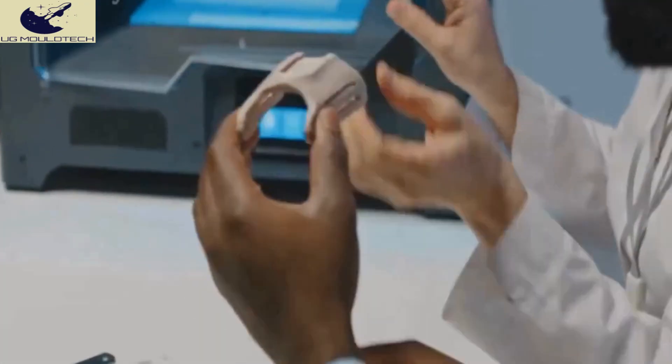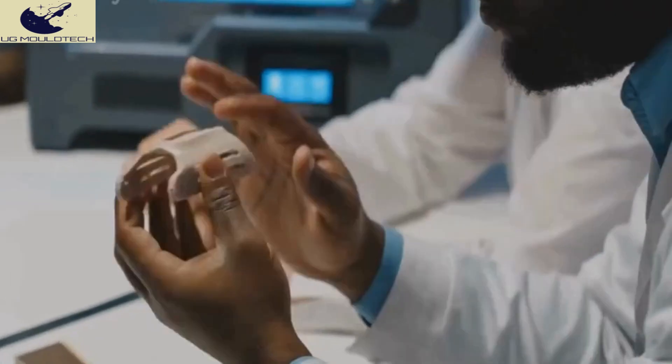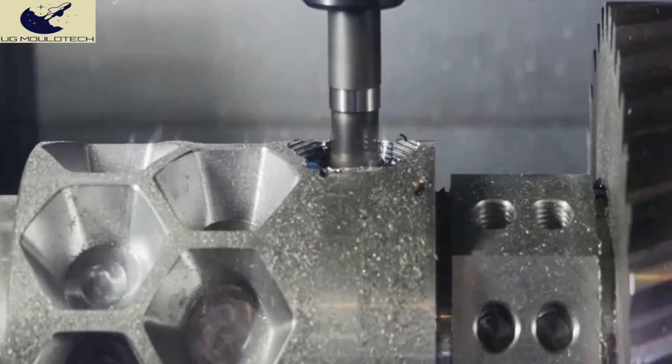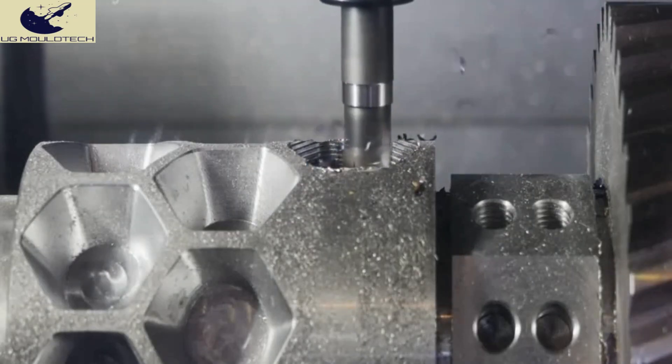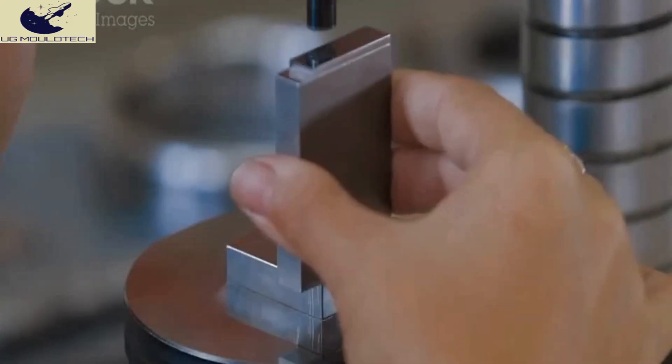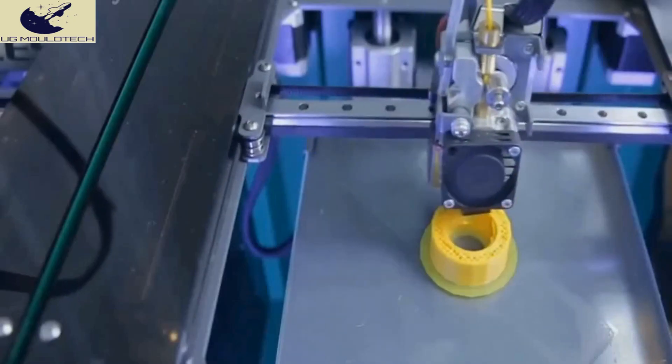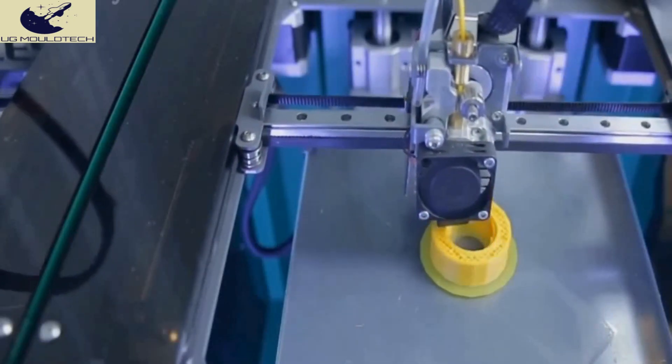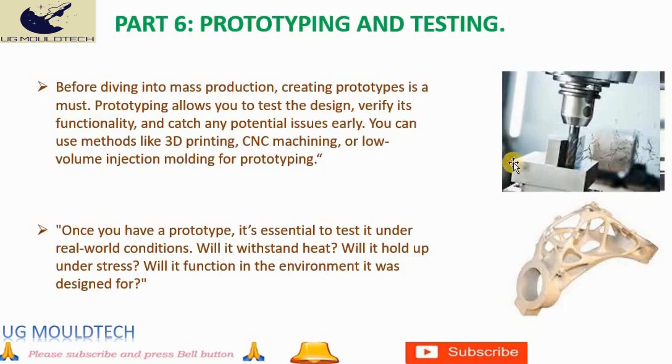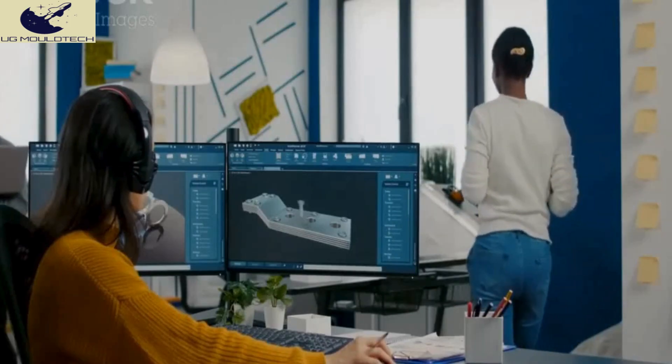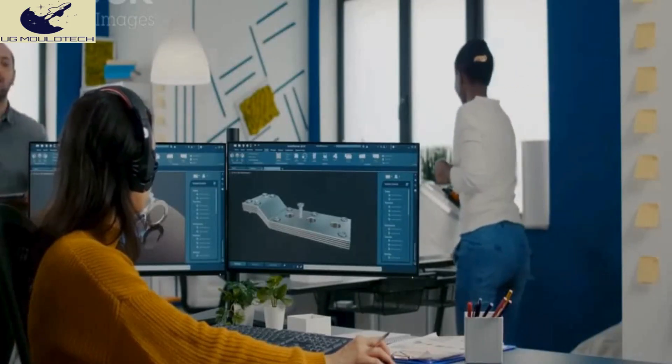Before diving into mass production, creating prototypes is absolutely essential. Prototyping allows you to rigorously test the design, verify its functionality, and identify any potential issues early on, saving time and resources. You can employ various methods like 3D printing, CNC machining, or low-volume injection molding to create accurate and functional prototypes. This iterative process ensures that the final product meets all design specifications and quality standards.